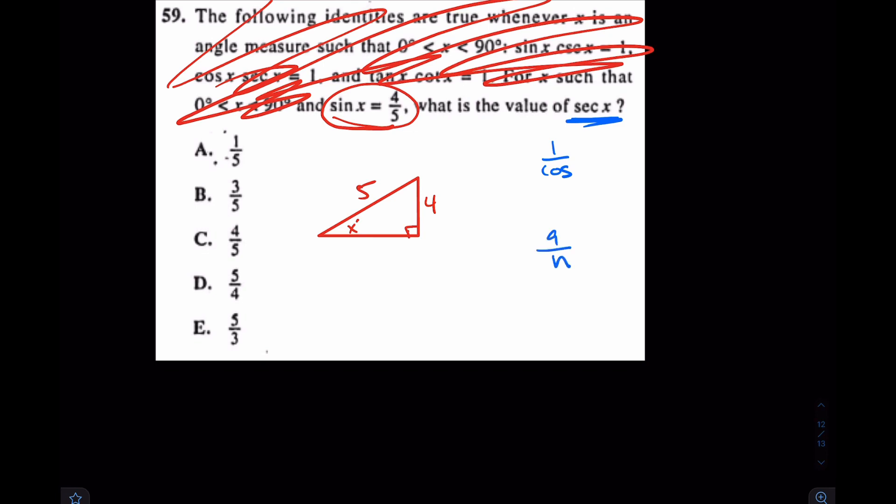Better yet, cosine was adjacent over hypotenuse. So we don't want adjacent over hypotenuse. We want the reciprocal of that. Hypotenuse over adjacent. In which case, we know that this is a 3, 4, 5 triangle from Pythagorean theorem, or Pythagorean triples. And then we're done. What's hypotenuse over adjacent? It's E.